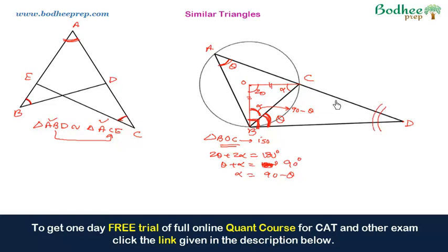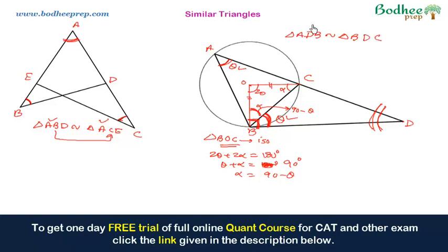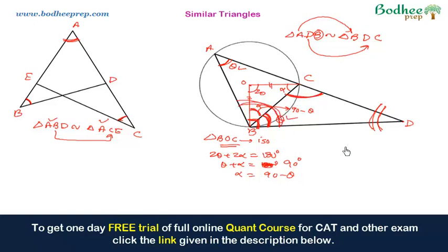Looking at triangle ADB and triangle BCD, angle D is common to both, and one pair of corresponding angles is also equal. So triangle ADB is similar to triangle BDC — written as BDC in order — because angle A equals angle C and angle B equals angle D. This is a very important type of question where we apply similar triangles.